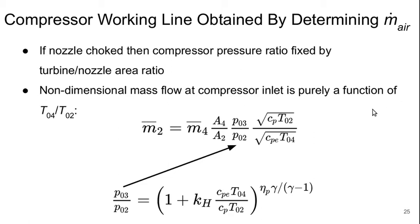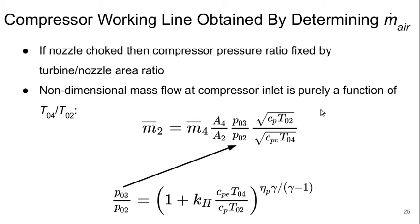To obtain the compressor working line, we need to determine the mass flow rate of air through the engine. If the nozzle is choked, the compressor pressure ratio is fixed by the turbine and nozzle area ratios. So the non-dimensional mass flow at the compressor then becomes purely a function of T04 over T02. M-bar 2 equals M-bar 4 times the area ratio between stations 4 and 2, the compressor pressure ratio, and something involving the specific heats and total temperatures. Since the pressure ratio can also be written in terms of the temperature ratio, this expression just depends on T04 over T02 plus geometry.